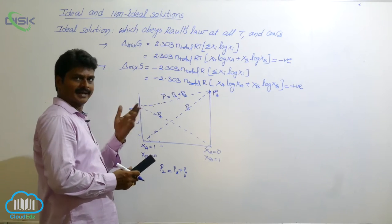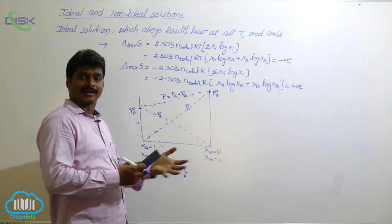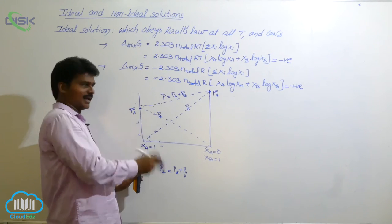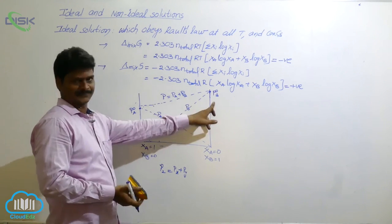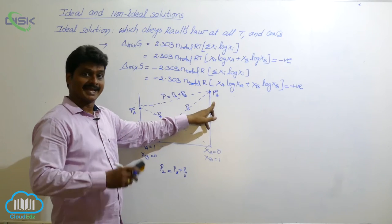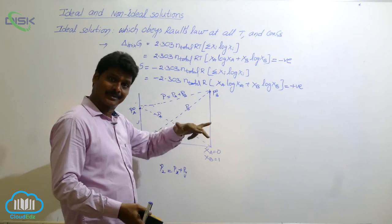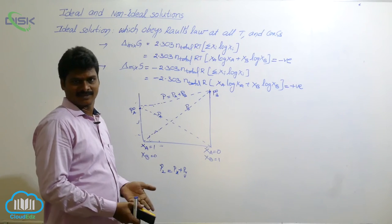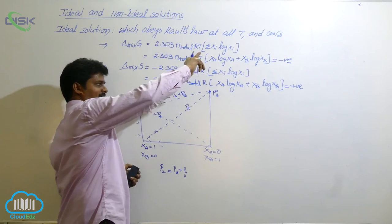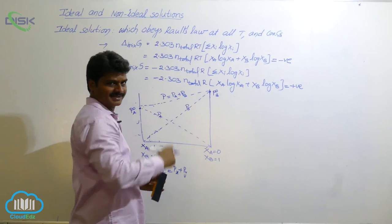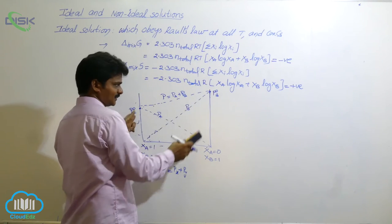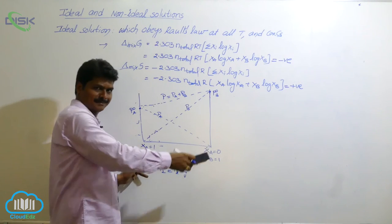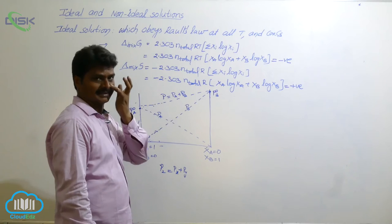How does total pressure vary with the composition of A and B? B has the higher vapor pressure value. So when there is an increase in the concentration of B in the liquid mixture, total pressure increases — there is an upward trend. B is more volatile, so increasing its concentration raises the total pressure.